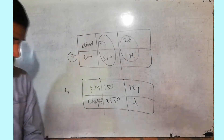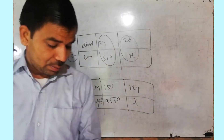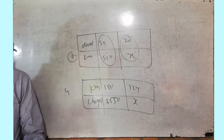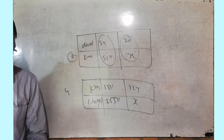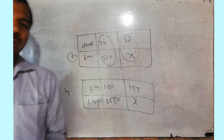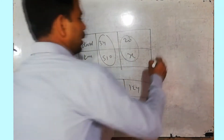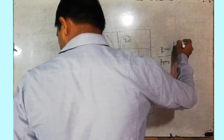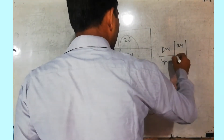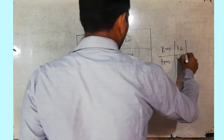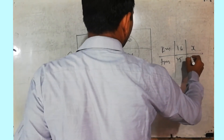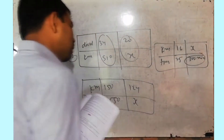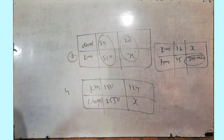Question number 5: a loaded truck covers 16 km in 25 minutes. At the same speed, how far can it travel in 5 hours? This is a direct proportion question. Set up km and time — convert 5 hours to minutes: 5 × 60 = 300 minutes. So 25 minutes gives 16 km, and 300 minutes gives X km. Solve using direct proportion. Question number 5 is very easy.